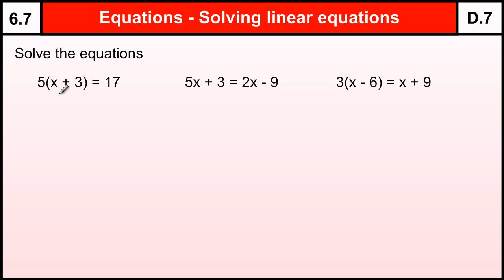So when I see a bracket question, the standard response is to multiply out the bracket. 5, this means 5 times x plus 3, 5 lots of x plus 3. So to multiply out this bracket I do 5 lots of x which is 5x and I do 5 lots of plus 3 which is plus 15. And the equal 17 stays the same.